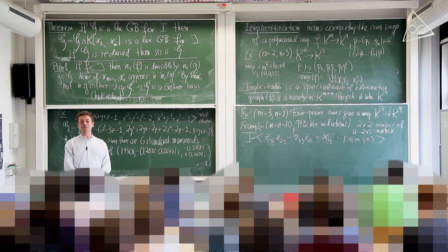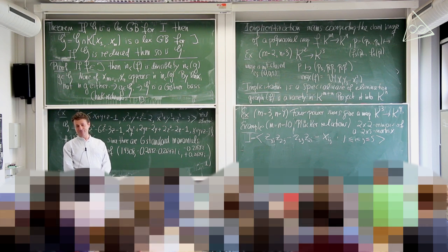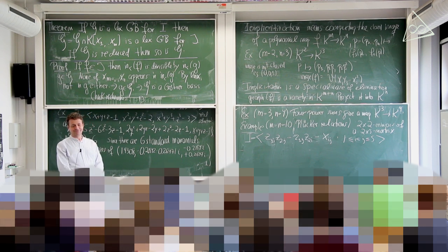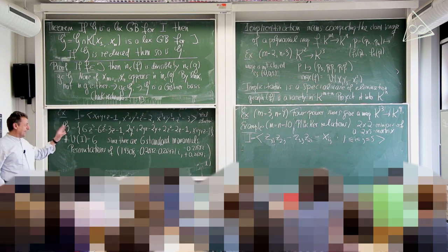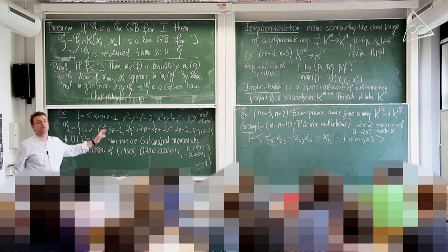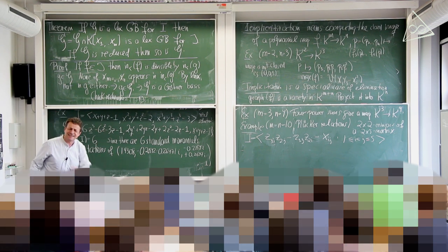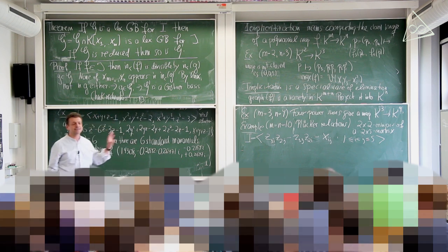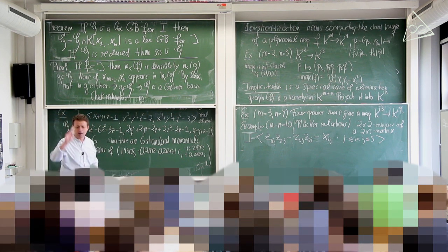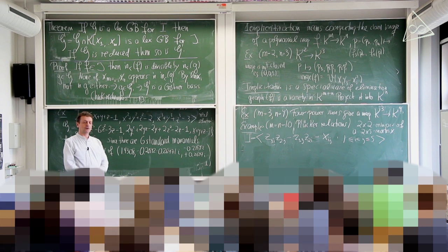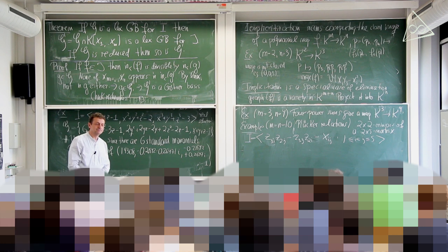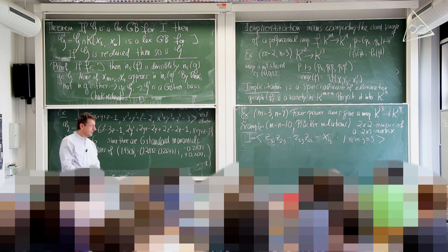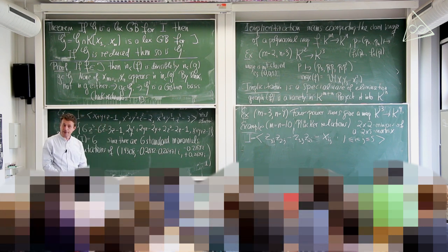To compute the image, we use the reduced lexicographic Gröbner basis. We set up a term order where the X's are cheap and the Z's are expensive, then eliminate the Z's. The image happens to be closed in this case. The elimination ideal intersected with the subring in the X-variables gives us the Plücker relations.